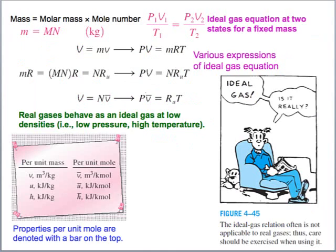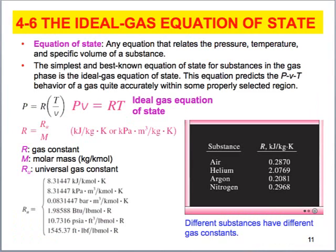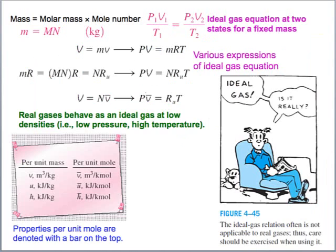We can write the ideal gas equation in several different ways. You can substitute in mass, so pressure times volume equals mass times the ideal gas constant times absolute temperature. We can also write it as pressure times volume equals the number of moles times the universal gas constant. There are several different ways to express the relationship for an ideal gas.